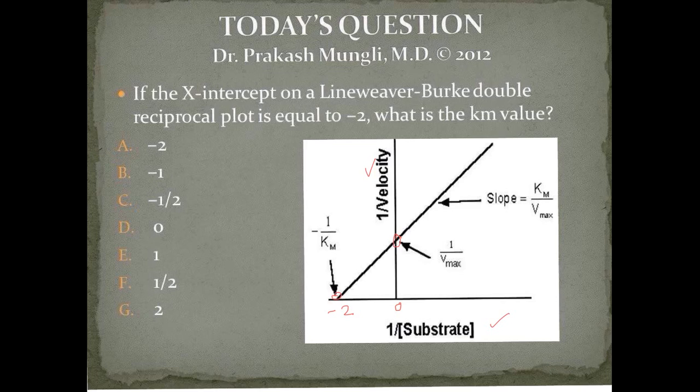The x-axis is substrate concentration and as you all know substrate concentration cannot be in negative values. The negative sign here simply indicates that this value is on the other side of 0 in the x-axis.